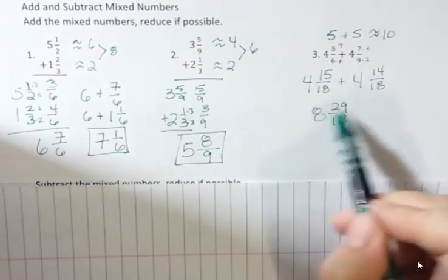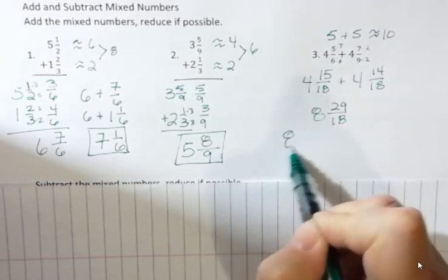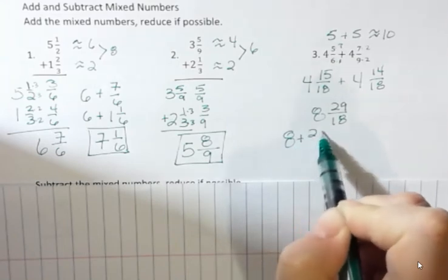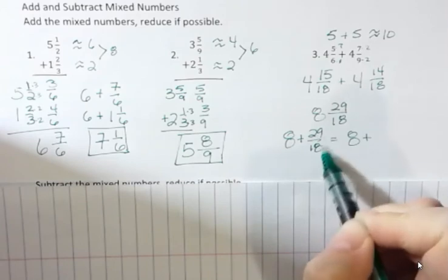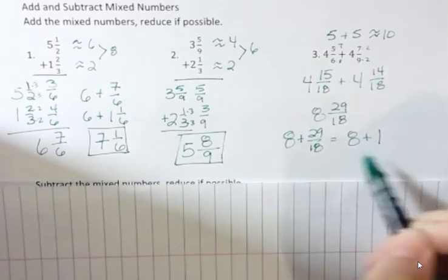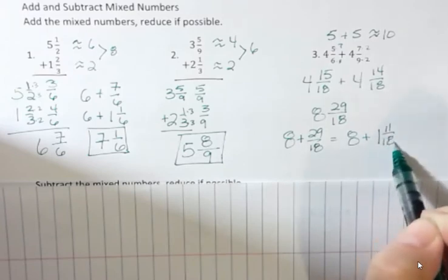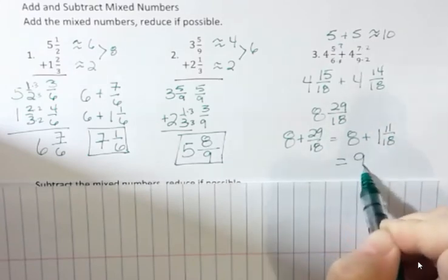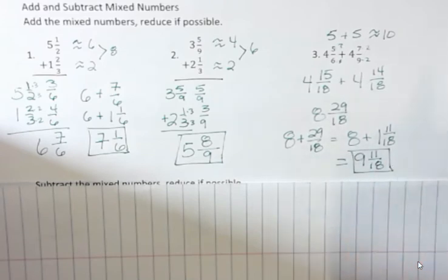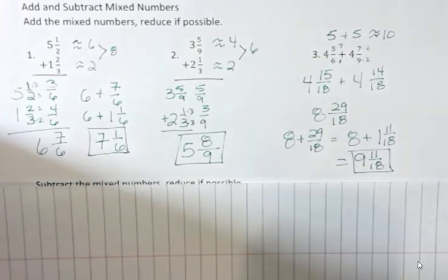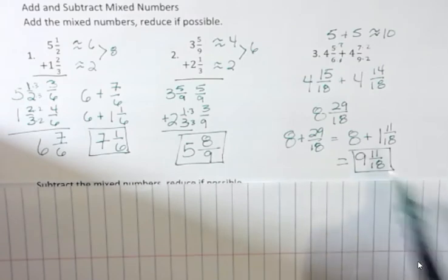Once again, this is incorrect form because it's an improper fraction here. What I actually have is eight plus twenty-nine over eighteen. And that looks like eight plus eighteen goes into twenty-nine one time with eleven left over. So my final answer here would be nine and eleven eighteenths. And that is in simplified form and it's in the correct form because I have a mixed number that has a proper fraction in it.